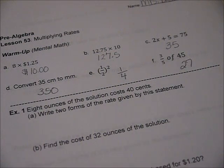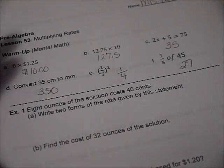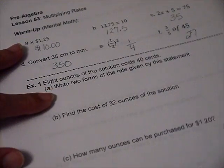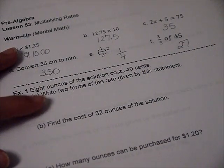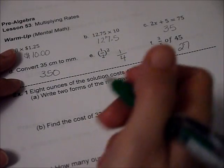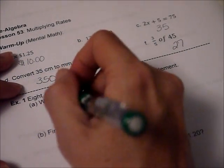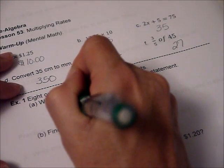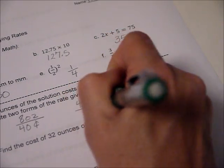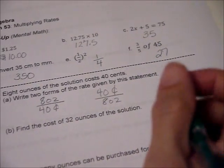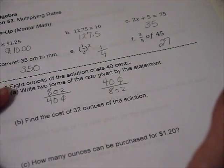We could also find out how long it would take us to travel 300 miles by doing a division problem. Let's go ahead and look at example one. Write two forms of the rate given by this statement: Eight ounces of the solution cost 40 cents. So these are kind of like what we did unit fractions the other day, 8 ounces over 40 cents, or we could do 40 cents on the bottom. That's what they mean by that, two forms of the rate.